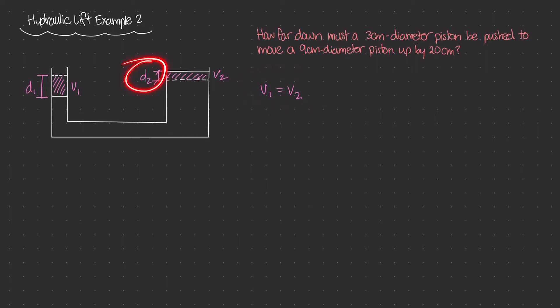Now we already know what d2 is, right? It's given in the question: 20 cm. So d2 is 20 cm and d1 is our unknown. This is what we're trying to find.